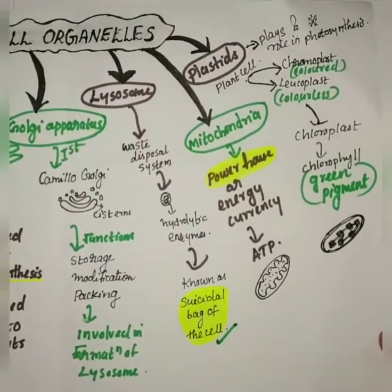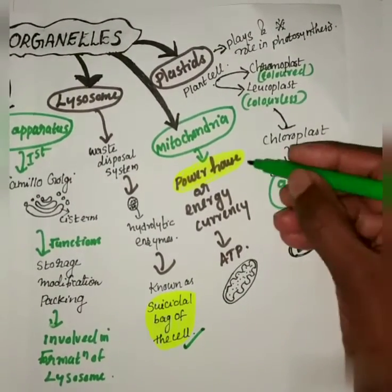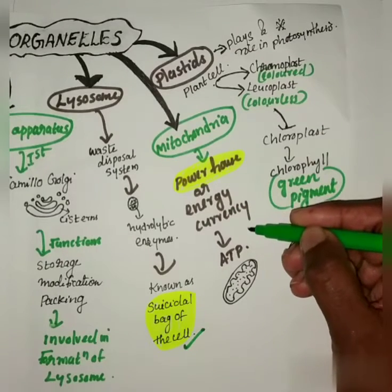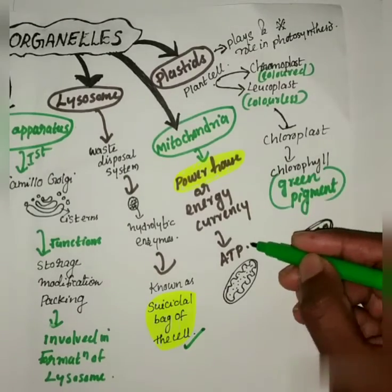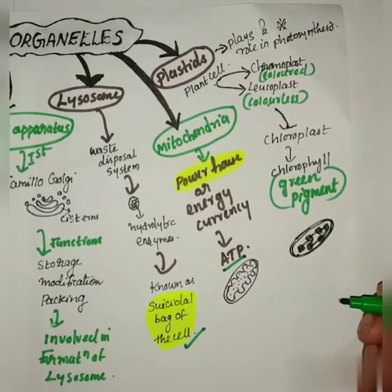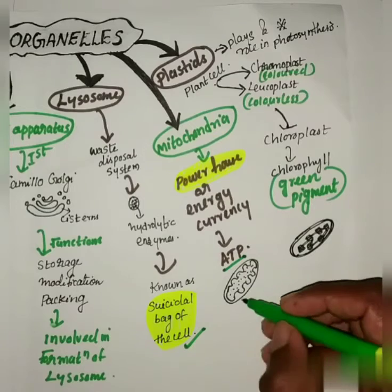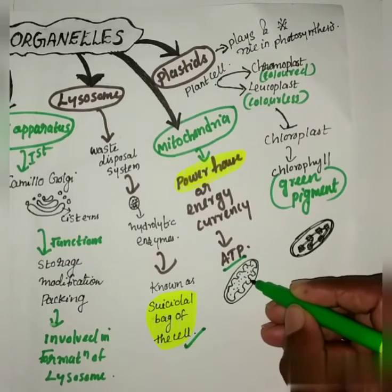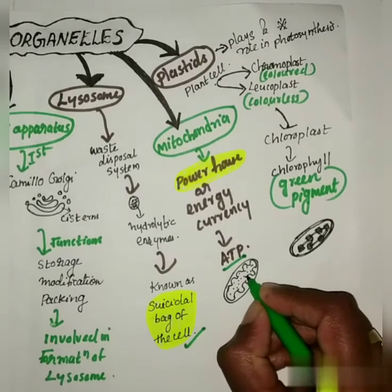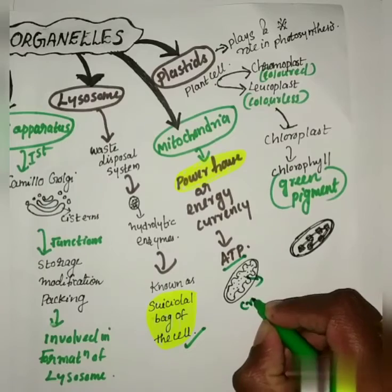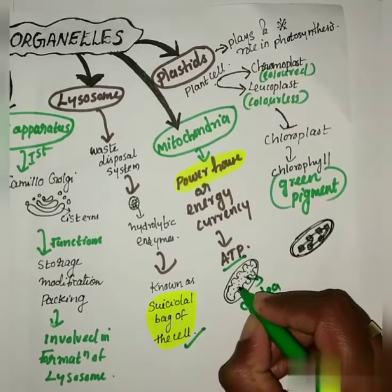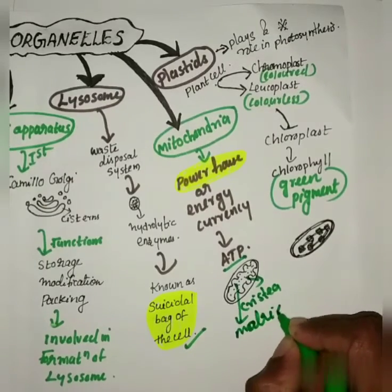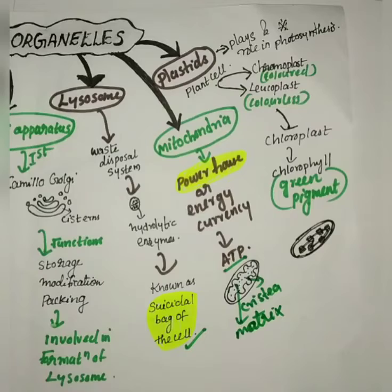The next cell organelle is mitochondria. Mitochondria are known as the powerhouse or the energy currency of the cell, producing energy in the form of ATP (adenosine triphosphate). The structure of mitochondria has a double membrane — the inner membrane is folded. The foldings of this membrane are called cristae, and the fluid inside the mitochondria is called the matrix.